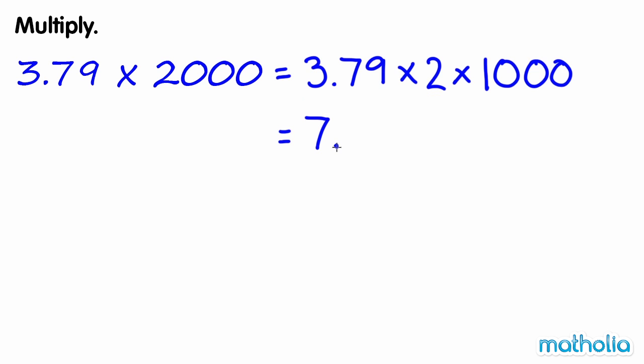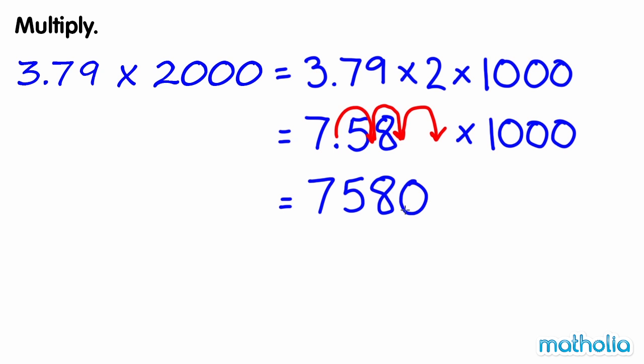Now we need to multiply by 1,000. We can do this by shifting the decimal point three places to the right. 3.79 times 2,000 equals 7,580.